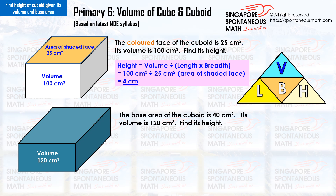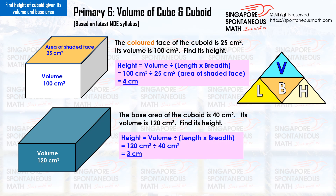The base area of the cuboid is 40 cm². Its volume is 120 cm³. Find its height. To find the height, we take the volume divided by the base area: 120 divided by 40 equals 3. The height of the cuboid is 3 cm.